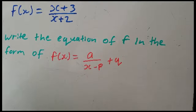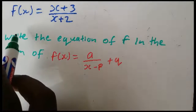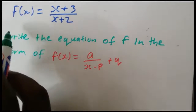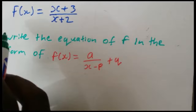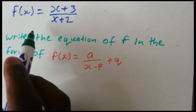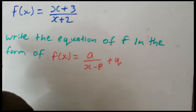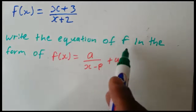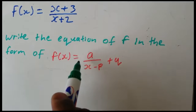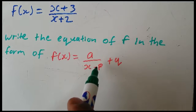But there are two methods to write this. They can give you an equation like this — for example, f(x) = (x + 3) / (x + 2). And they say write the equation of f in the form f(x) = a/(x − p) + q.